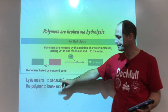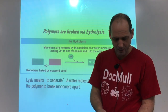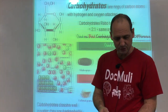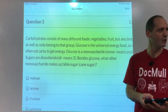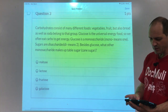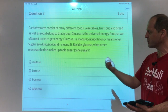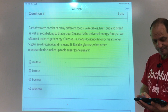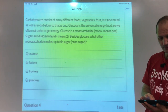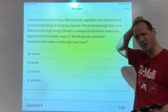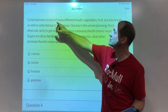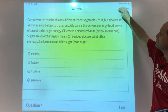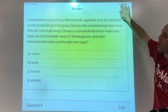Lysis means to separate. That's pretty straightforward. You're going to be superstars by the end — this is the hardest chapter. Carbohydrates consist of many different foods: vegetables, fruit, but also bread as well as soda belong to that group. Glucose is a universal energy food, so we often eat carbs to get energy. Glucose is a monosaccharide — it's one ring of carbon, carbon, carbon, carbon, carbon, and then an oxygen. That's the ring. And then each carbon has an OH and an H attached to it, and that makes a monosaccharide. So that's a glucose molecule right there.